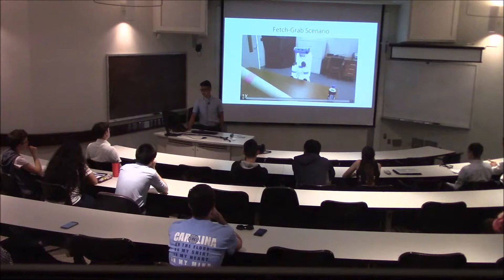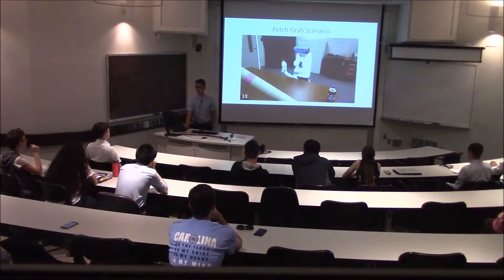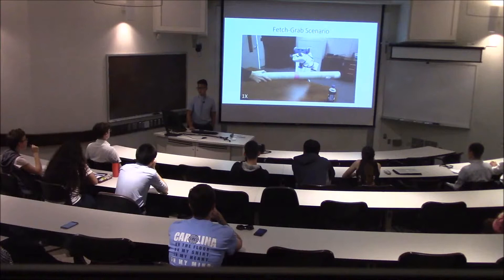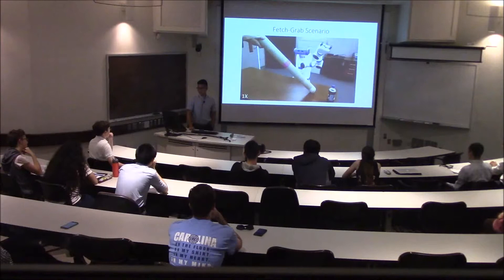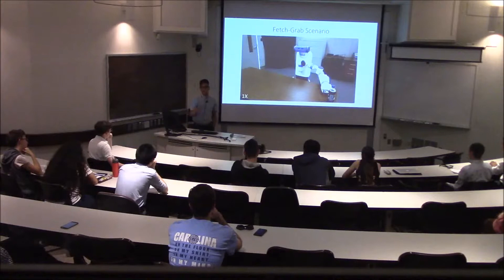Here is a scenario we've constructed for the fetch robot where it is trying to reach a pre-grasp configuration. We have a baton that's actively opposing the movement of the robot's arm. The reaction to the movements of the baton is done on the local processor, but the actual bigger roadmap is received from the cloud.